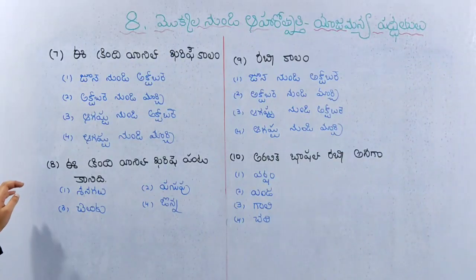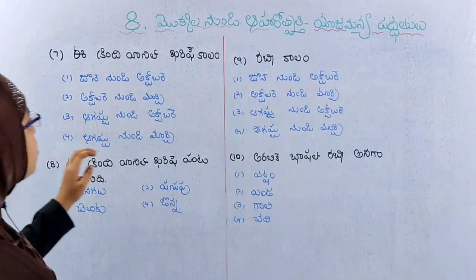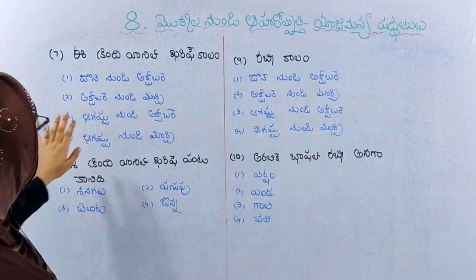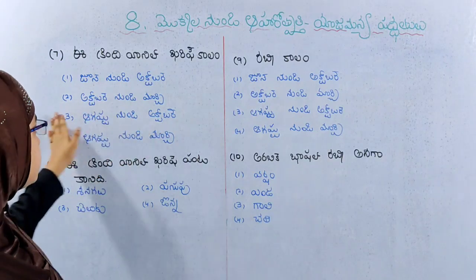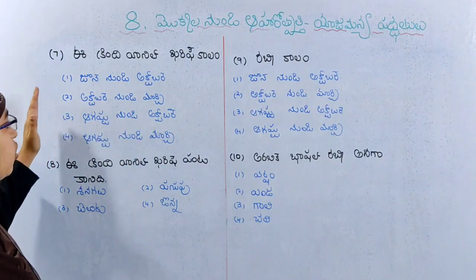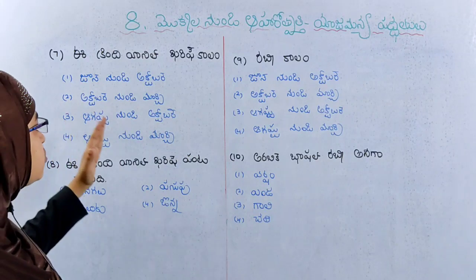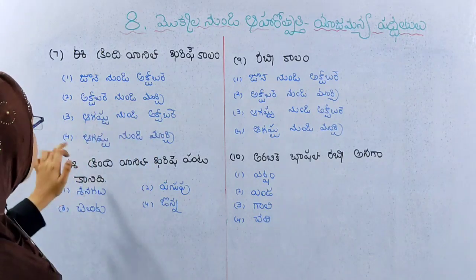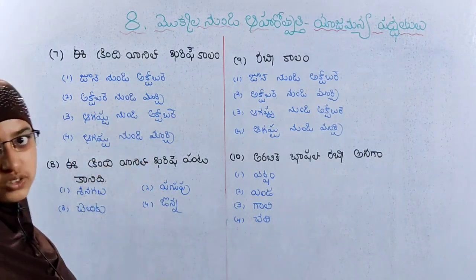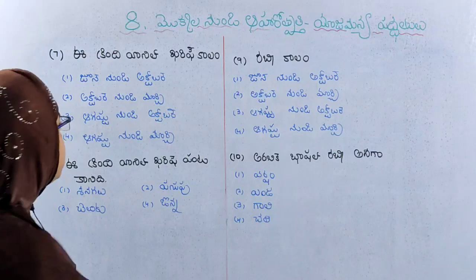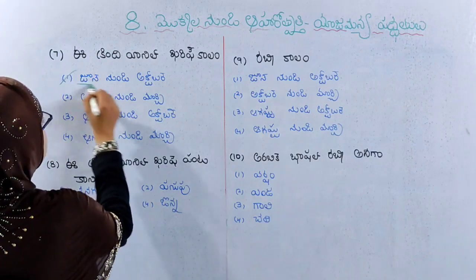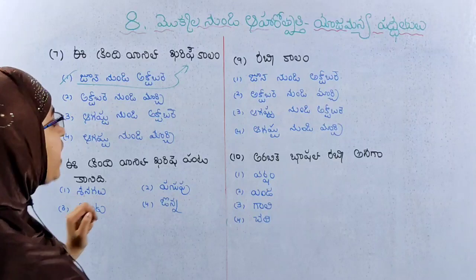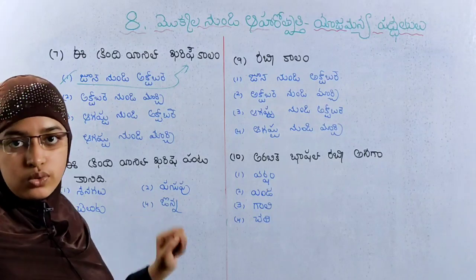The next question is about the Kharif crop season. Option 1 is June–October. Option 2 is October–March. Option 3 is August–October. Option 4 is August–March. The correct answer is June–October. The Kharif crop season is June–October.